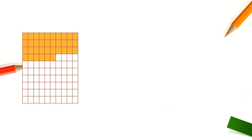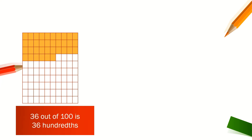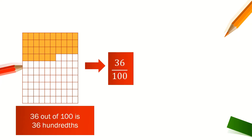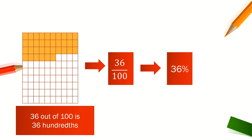Look at the diagram. State the percentage of the shaded boxes. 36 out of 100 boxes are shaded. 36 out of 100 is 36 hundredths. We can write it as a fraction: 36 over 100. 36 over 100 is 36%.